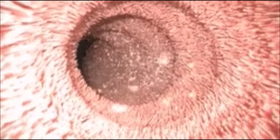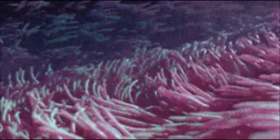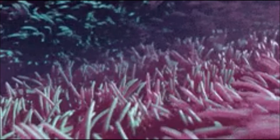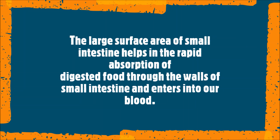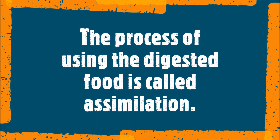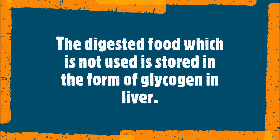The inner surface of the small intestine has millions of tiny finger-like projections called villi (singular: villus). The villi increase the absorptive surface area of the small intestine, enabling rapid absorption of digested food through its walls. The process of using the digested food is called assimilation. The blood carries the digested food to all parts of the body, where it is assimilated equally by all organs, tissues, and cells. Digested food that is not used is stored in the form of glycogen in the liver.